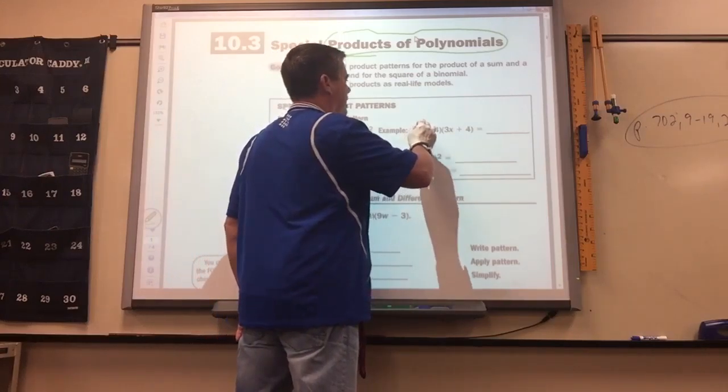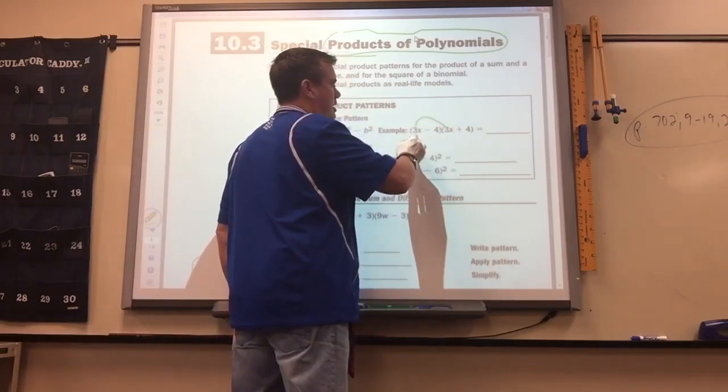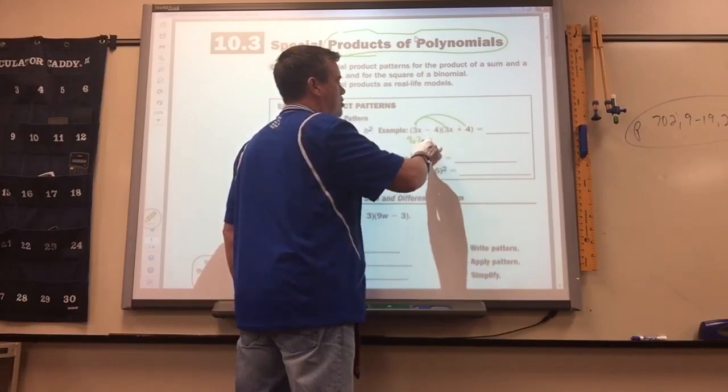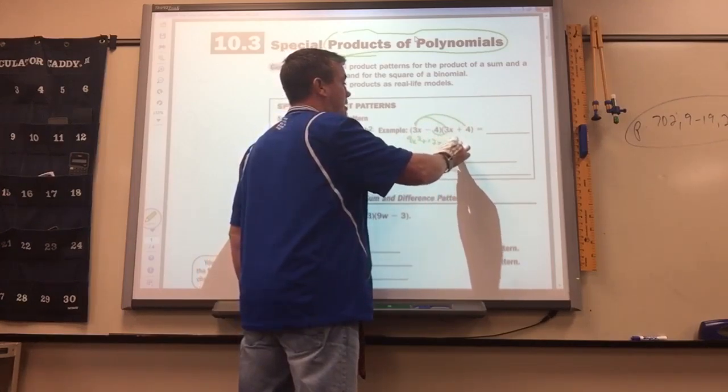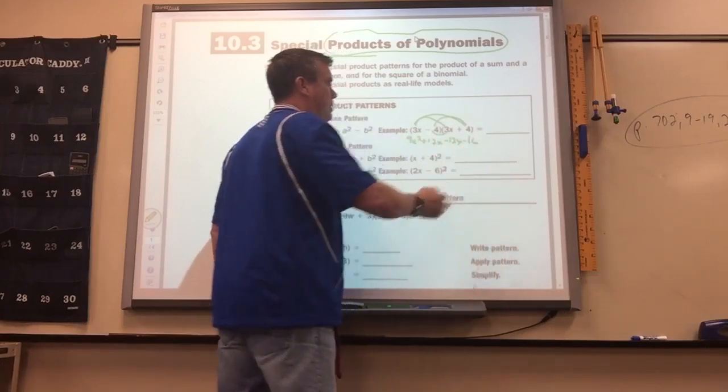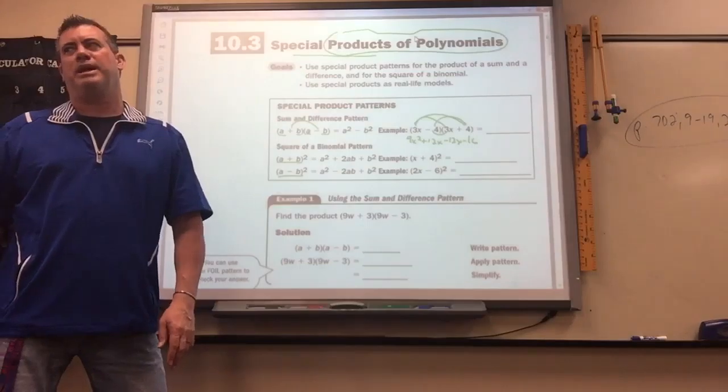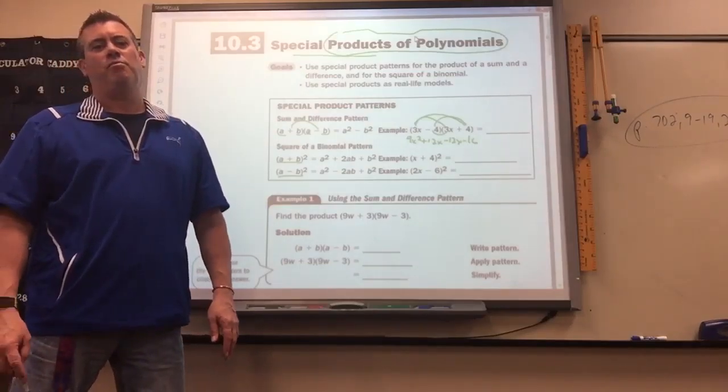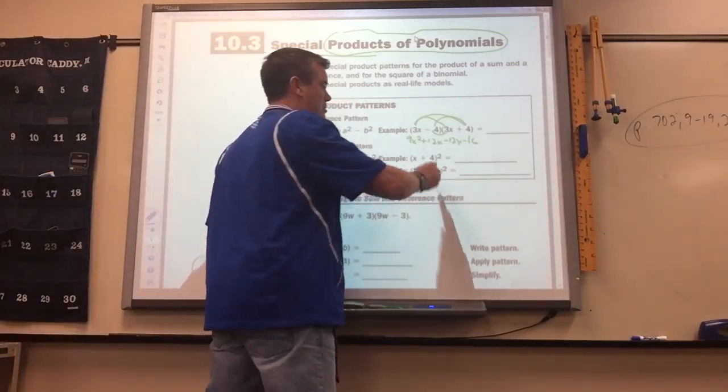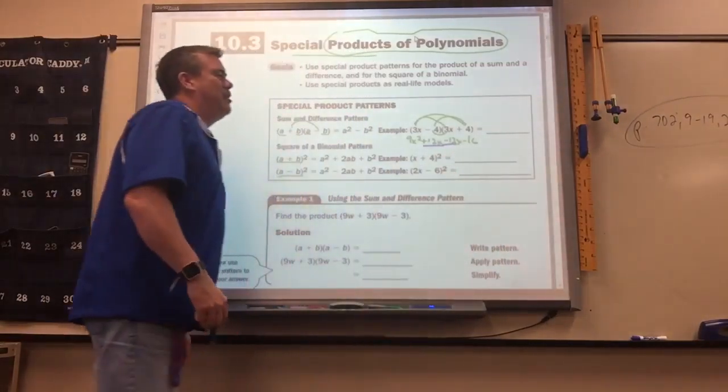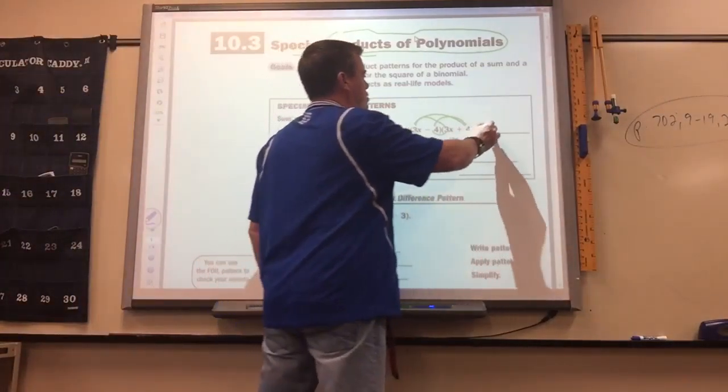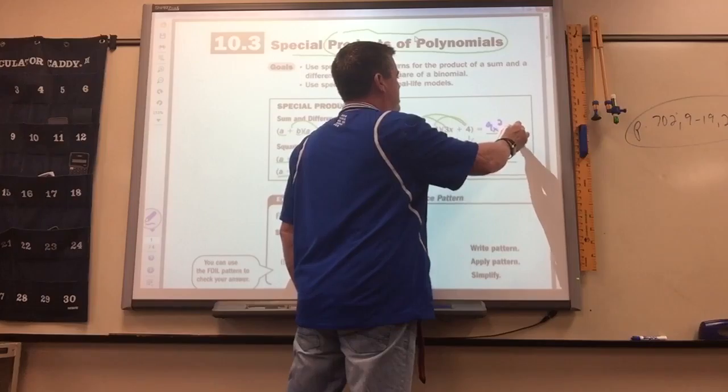When you have something like that, when you do FOIL, it's first times first is 9x squared. That gives you 12x. This gives you negative 12x, and that gives you negative 16. So when you combine like terms, what happens? They cancel. Those two cancel. There's a plus 12 and a minus 12.